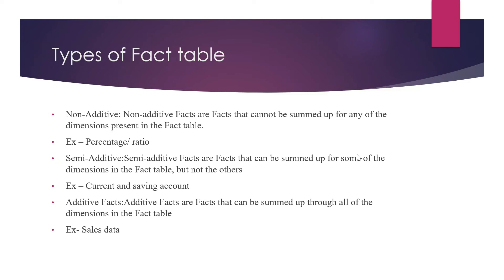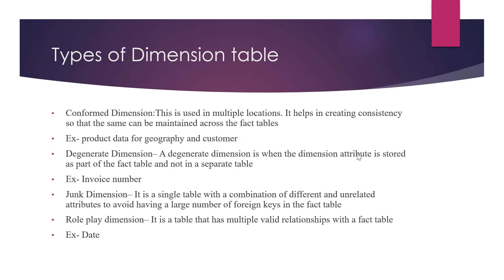Additive facts are facts that can be summed up through all the dimensions in the fact table. For example, sales data — when you buy a car, that customer will have all details related to them. In sales you can have all related tables: customer data, transaction data, product data. That's why additive facts can be summed up through all the dimension tables in a fact table.